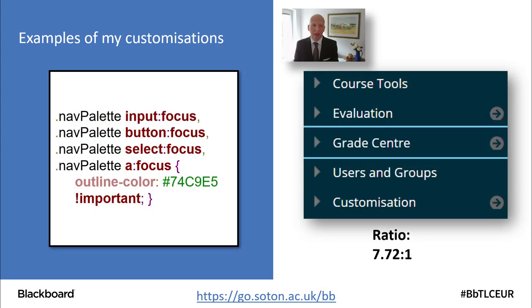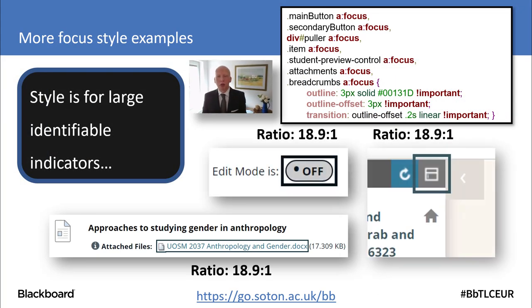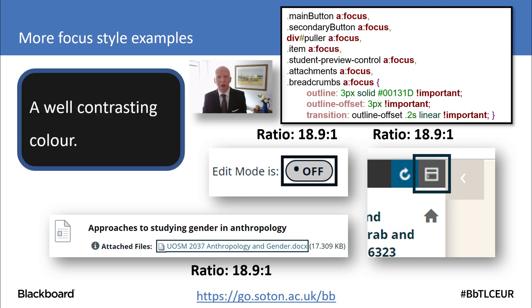The box also changes colour when I focus on it. Within the control panel I changed the colour there as well, so I need to make sure the colour I use is both on-brand and accessible. I went through finding more and more elements within the Blackboard theme where I could change the focus indicator, and I really wanted to make it large and identifiable — typically three pixels wide with a two pixel offset, so there's a gap around the element I'm focusing on, and a really well-contrasting colour.